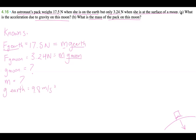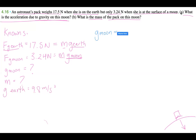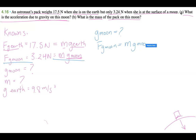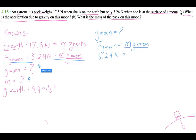Looking at part a, if we want g_moon, we have fg_moon equals mass times g_moon. We know fg_moon is 3.24 newtons, but we don't have mass or g_moon — so we can't solve this directly yet. We first need to find mass.